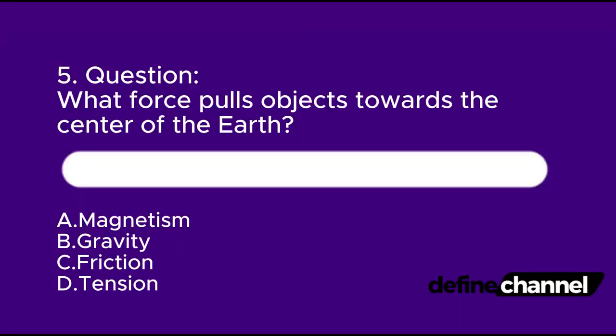Question 5. What force pulls objects towards the center of the Earth? A. Magnetism. B. Gravity. C. Friction. D. Tension. Which is the correct answer?